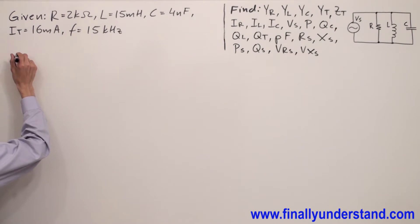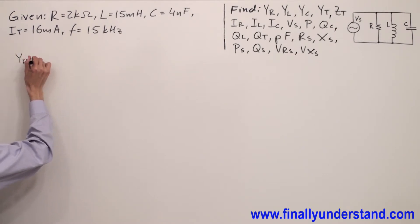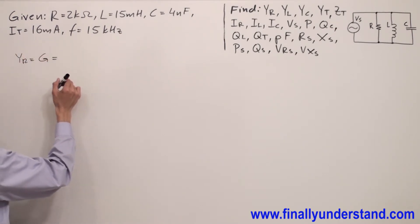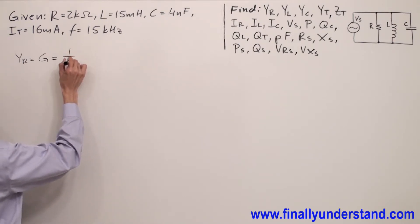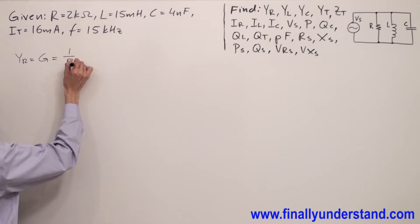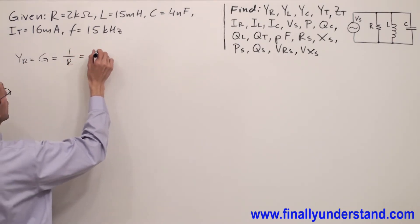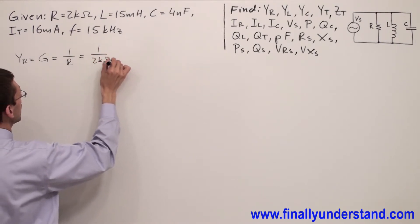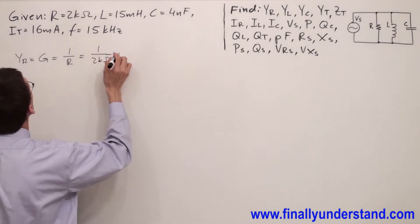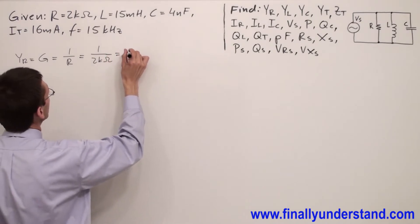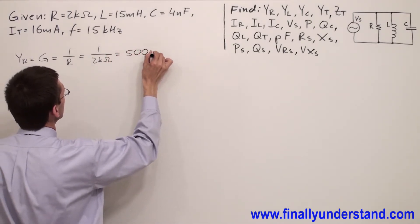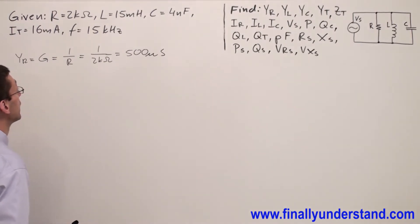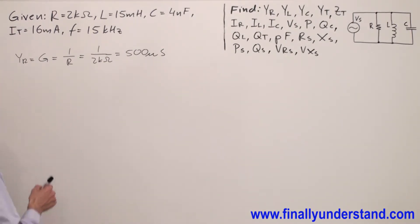So what we're supposed to do first, we're supposed to find Y_R, admittance of the resistor. Y_R we can say this is equal to G, conductance, so this is one over R. This is equal one divided by two kilo ohms, and this is equal 500 microsiemens.